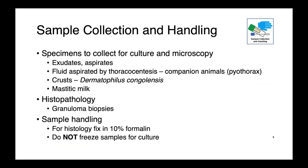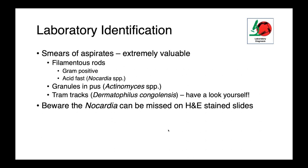Specimens to collect really depend on what you're dealing with: exudates, aspirates, fluid aspirated by thoracocentesis (think pyothorax in companion animals), crusts, and mastitic milk. Histopathology can be very useful, so getting biopsies of granulomas. For sample handling, for propagative methods we don't want to be freezing our samples; if requesting histology, fixing in 10% formalin is certainly possible. Smears of aspirates are very useful in coming up with a presumptive diagnosis — seeing those filamentous gram-positive rods, or potentially acid-fast structures, can be very useful for Nocardia. Identification of granules in pus or tram-track lesions are also nearly pathognomonic.